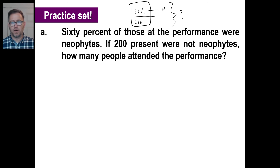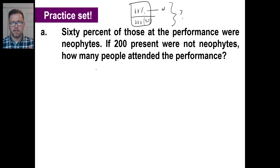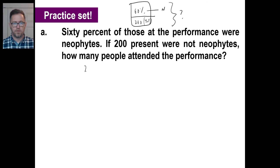If we see 200 and we know that the neophyte part is 60%, what does the rest have to be? 40%, right. So the English sentence is: 200 is 40% of what?